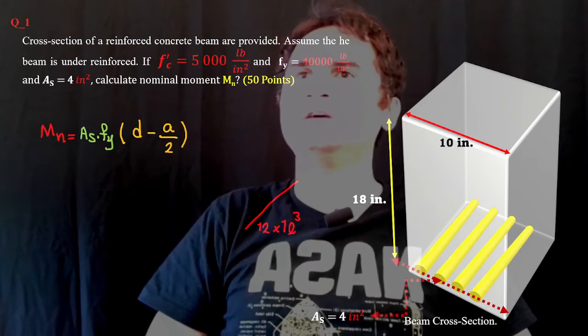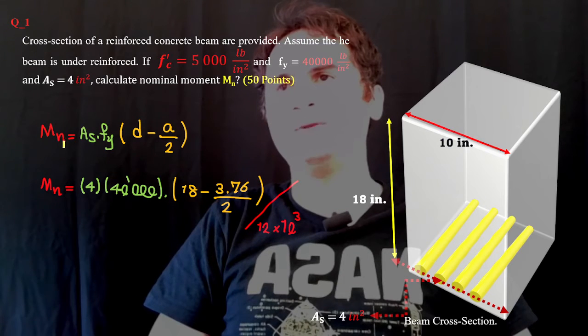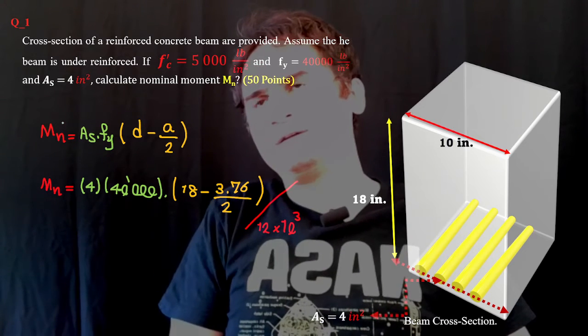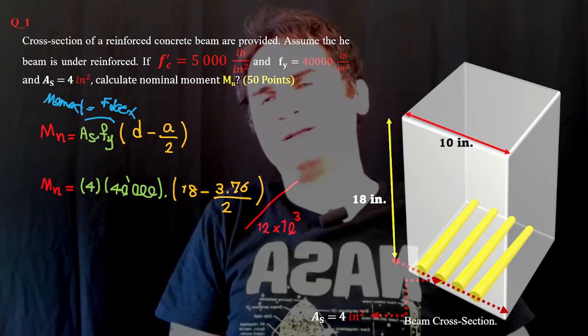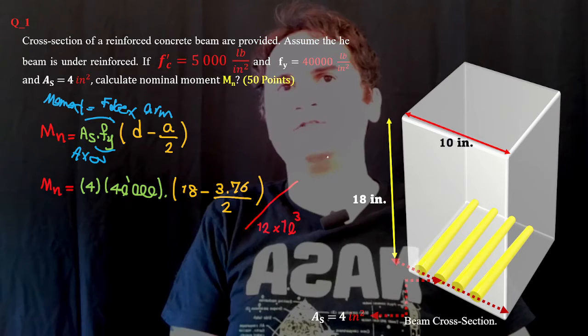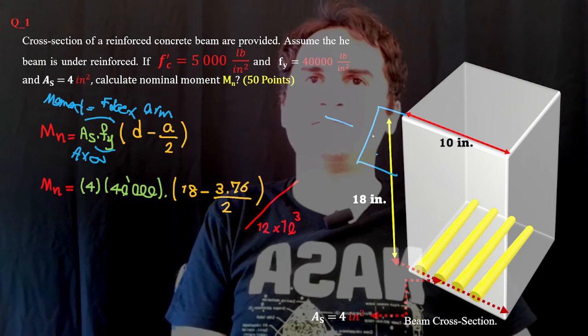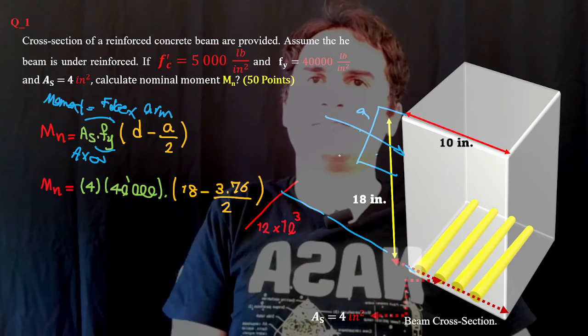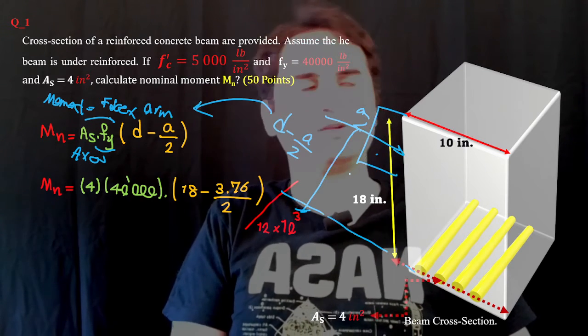As soon as we have the neutral axis, d and c, we can easily replace that in the equation for nominal moment. Any moment equals force times arm, which is stress times area of steel times the arm. Our arm is d minus a over 2.